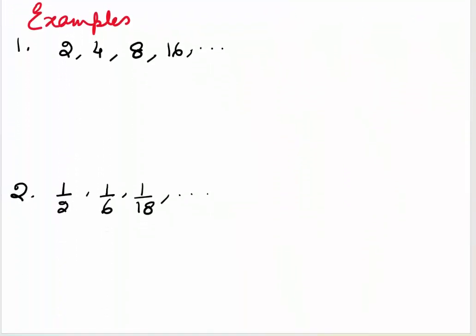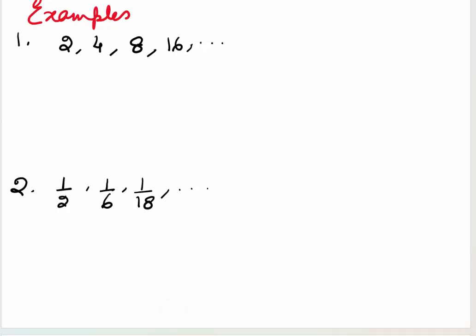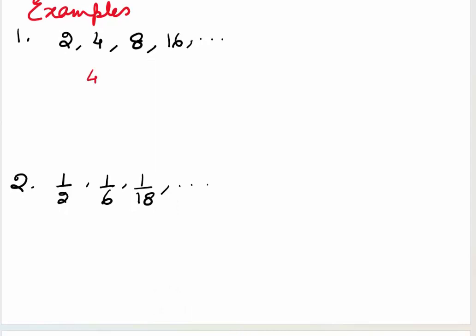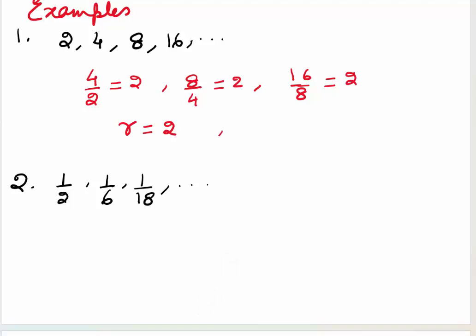Now let's look at some examples. We are given the progression 2, 4, 8, 16, and so on. Let's see whether it's a GP or not. The ratio of consecutive terms is 2 throughout. So r is 2, and hence it's a geometric progression.